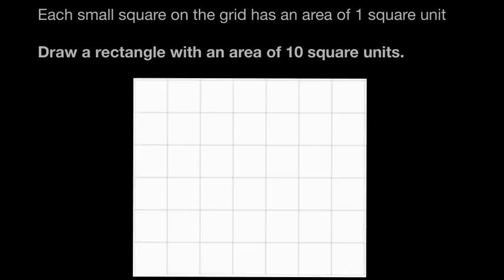Each small square on the grid has an area of one square unit. So each of these small squares is one square unit — this square is one square unit, and this square is one square unit, and so on.